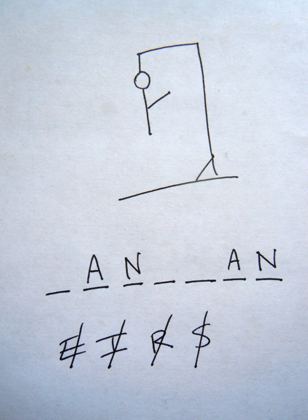The word to guess is represented by a row of dashes, representing each letter of the word. In most variants, proper nouns, such as names, places, and brands, are not allowed.